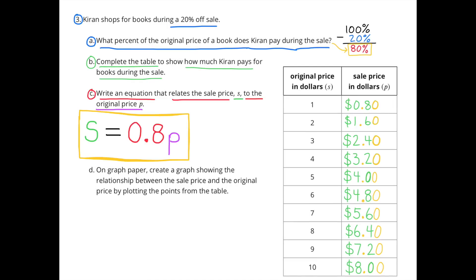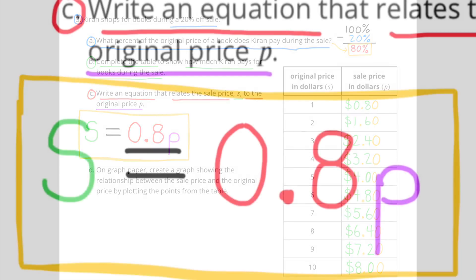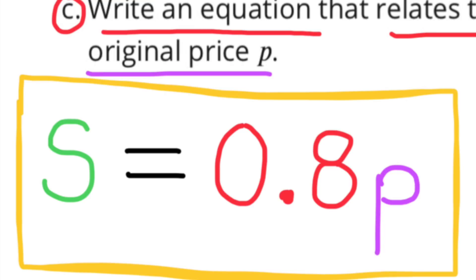C. Write an equation that relates the sale price, S, to the original price, P. That equation would be S equals 8 tenths P.